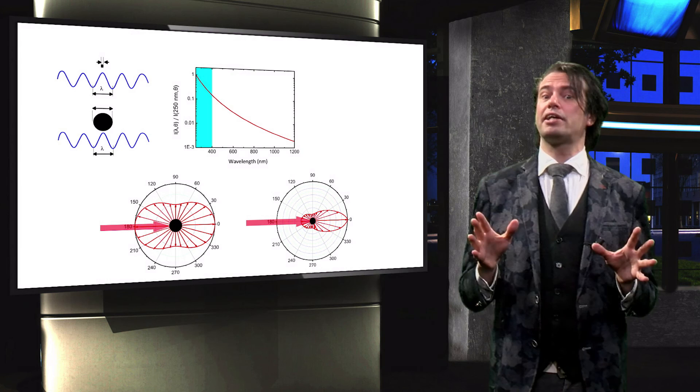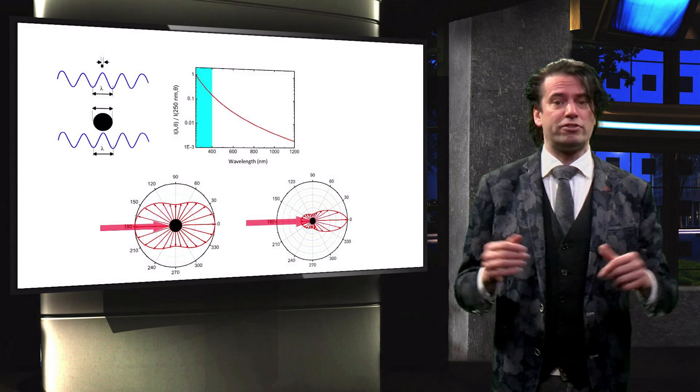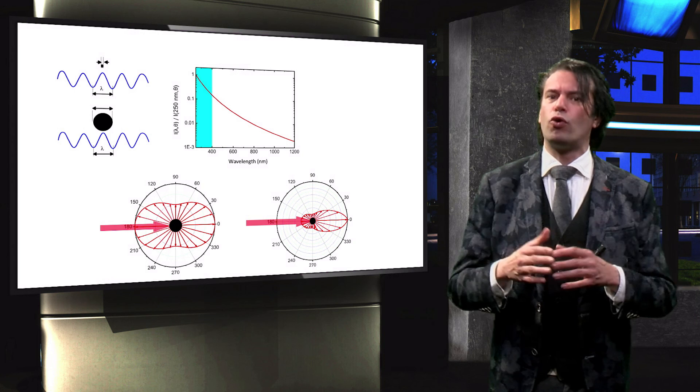We discussed how Mie scattering, on the other hand, is less wavelength dependent, and therefore scatters all visible wavelengths more or less equally. Mie scattering occurs predominantly in forward direction, which explains why a setting and rising sun appears red. Finally, we discussed how texturing features with different sizes can be used to effectively scatter different parts of the spectrum.